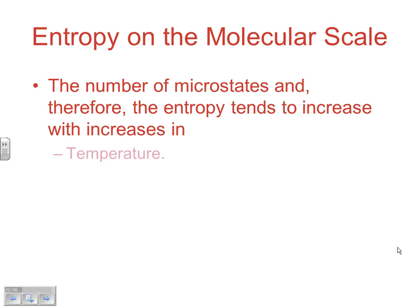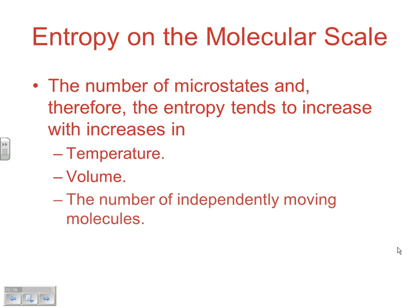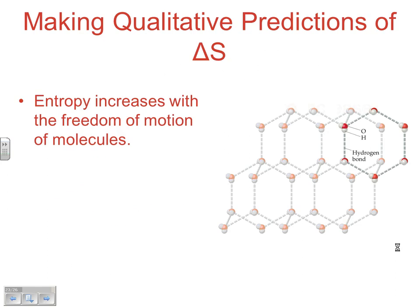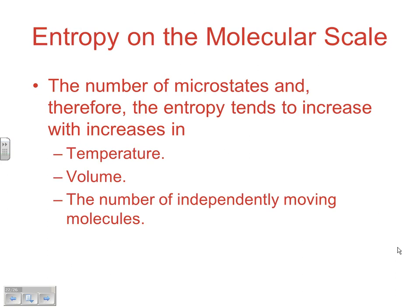The number of microstates, and therefore the entropy, tends to increase with an increase in temperature, with an increase in volume. The number of independently moving molecules increases. All of those would generally cause an increase in the entropy. So if your temperature is increasing, your volume is increasing, or your number of particles independently moving is increasing, then your entropy would be increasing.